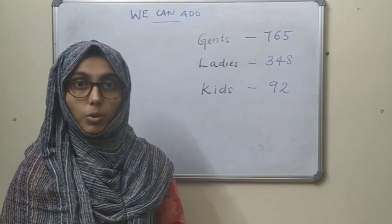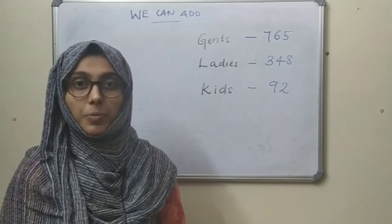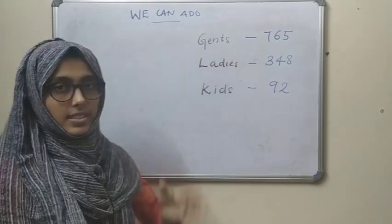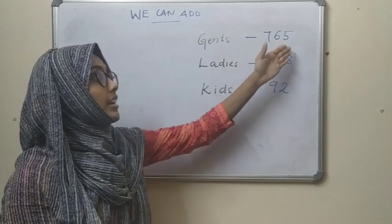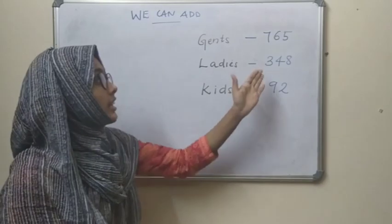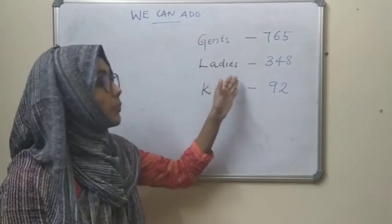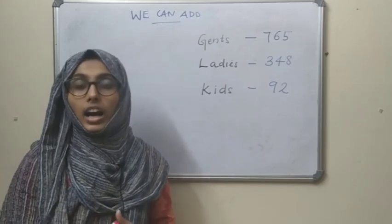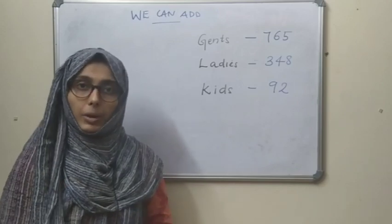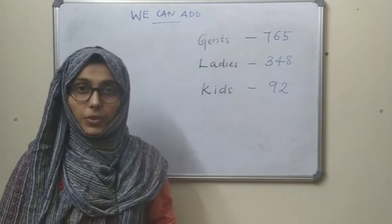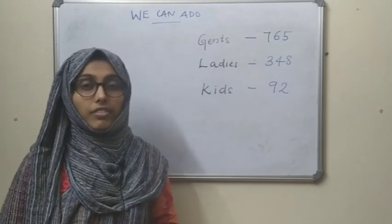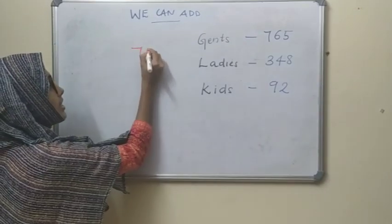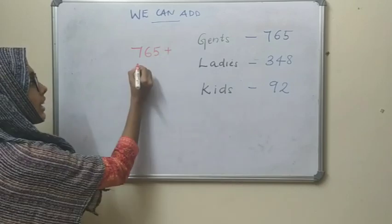Now my dear students, you can see a heading in the textbook: Circus. Did you ever go to see a circus? It is given that 765 tickets were given to gents, 348 tickets were given to ladies, and 92 tickets were given to kids. We want to find how many tickets were given in total. We add all three: first, 765 plus 348.